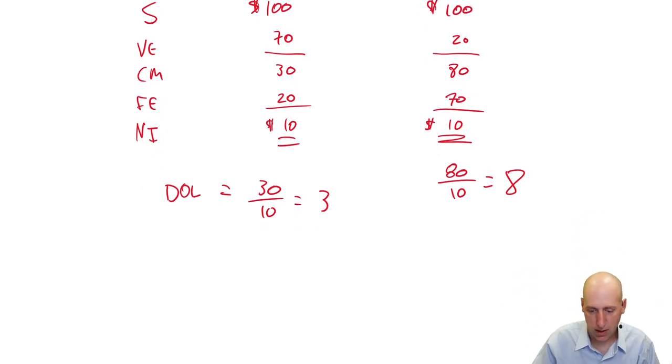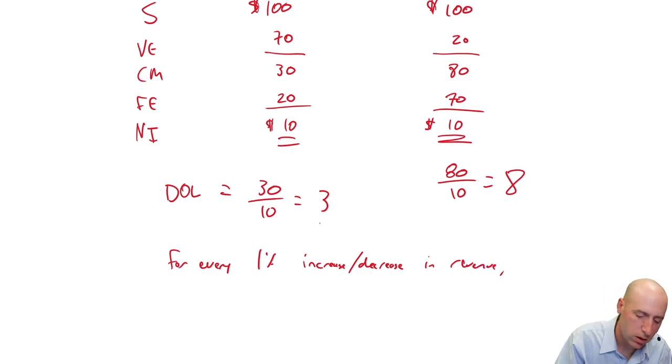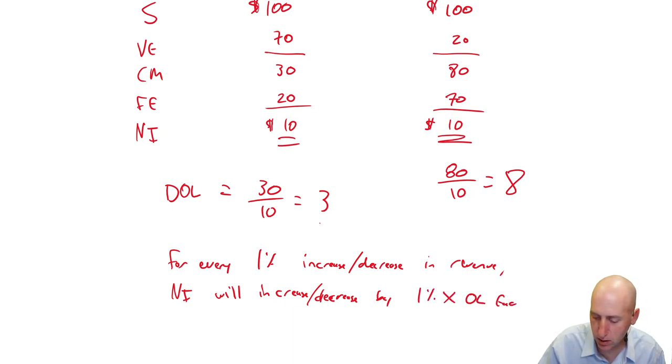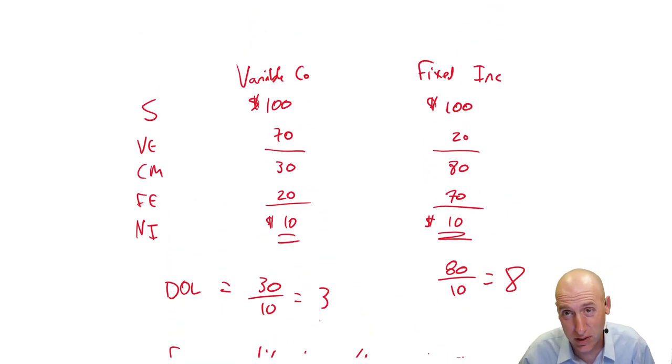What this means, and I'm going to write this out in a sentence. For every 1%, I'm going to say increase, but it could be decrease, increase or decrease in revenue, net income will increase or decrease by 1% times the operating leverage factor. So, let's say revenues for these companies both go up by 10% next year.